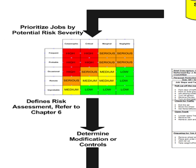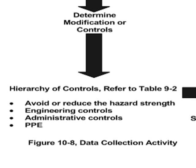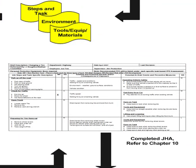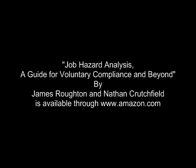When that's completed, we determine the modifications or controls using the hierarchy of controls. Then we will move into the actual development of the job hazard analysis, and from the job hazard analysis, develop standard operating procedures that incorporate safety right into the training and management of the job itself. We will continue the process in our future discussions and work our way through Job Hazard Analysis: A Guide for Voluntary Compliance and Beyond. So, let's move on.